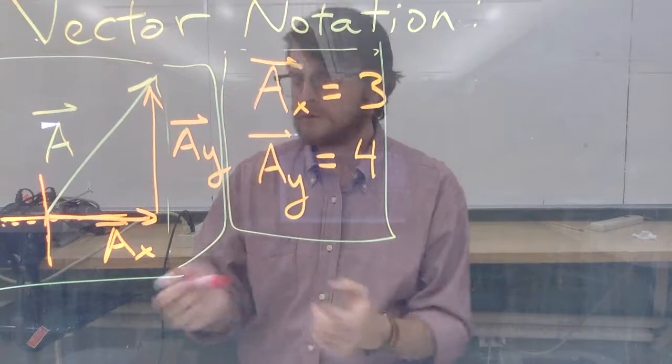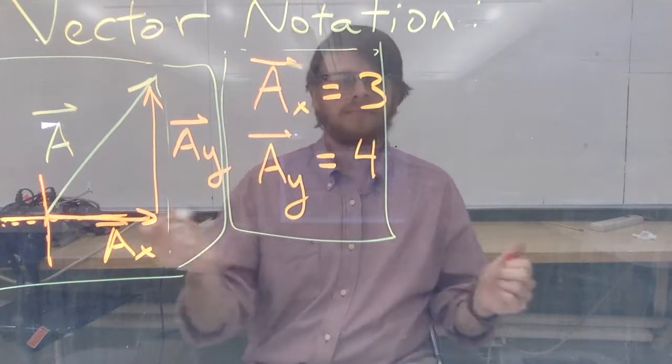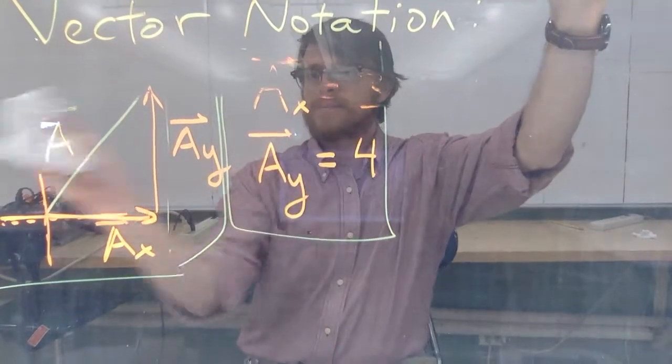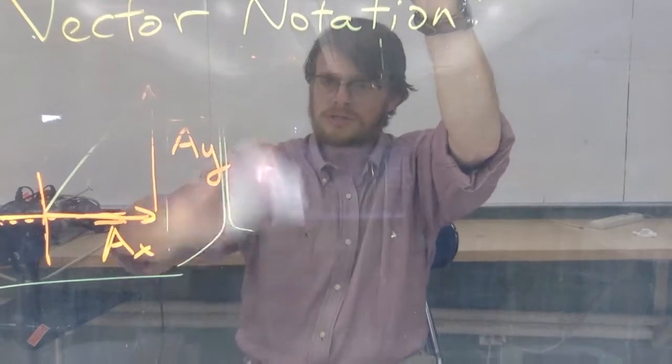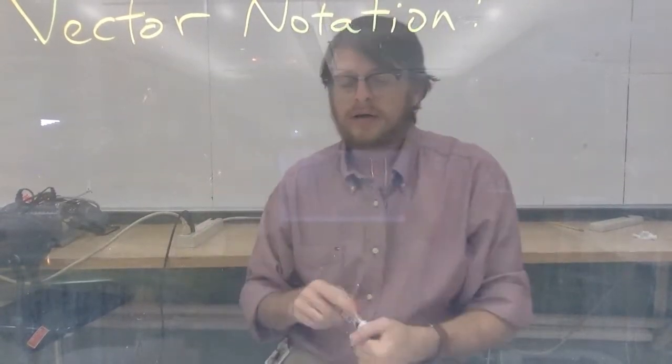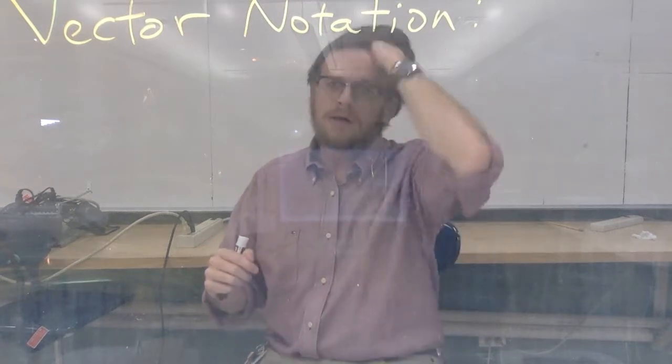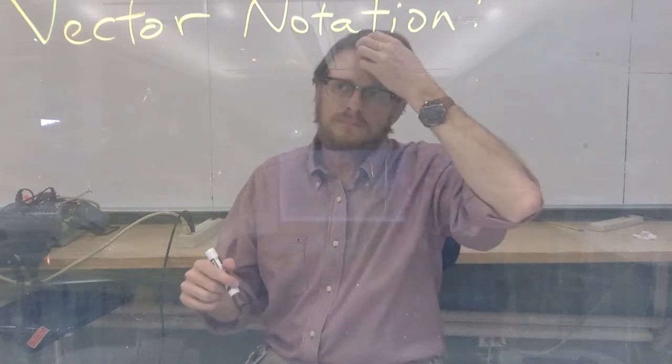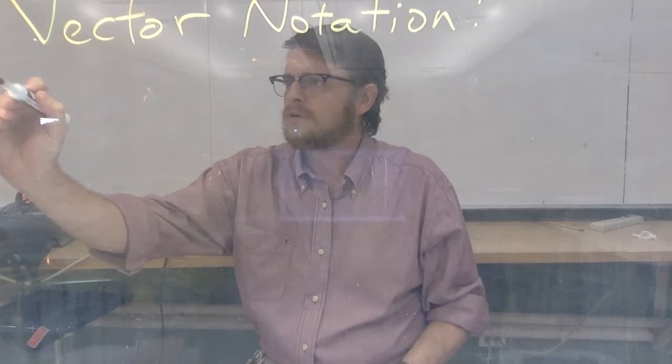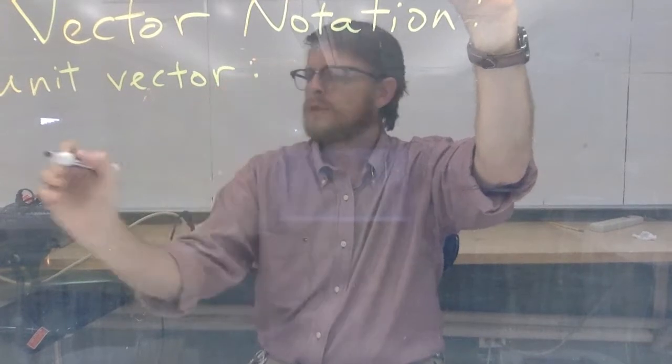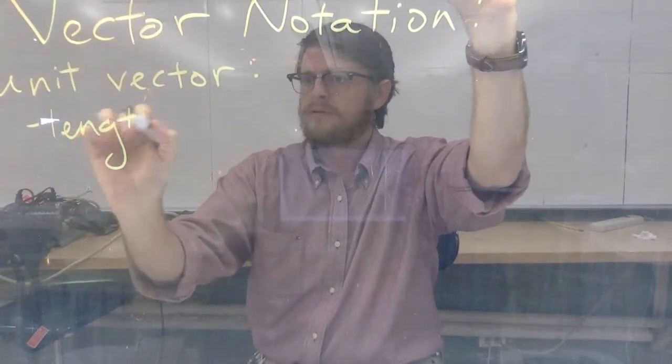So in order to do that, I'm going to define something called the unit vector. So this new vector notation is going to be something called the unit vector. And the unit vector is a vector that points in some particular direction and is of length one. So a vector of length one. So a vector of length one means, unit vector, it just means it has length one.